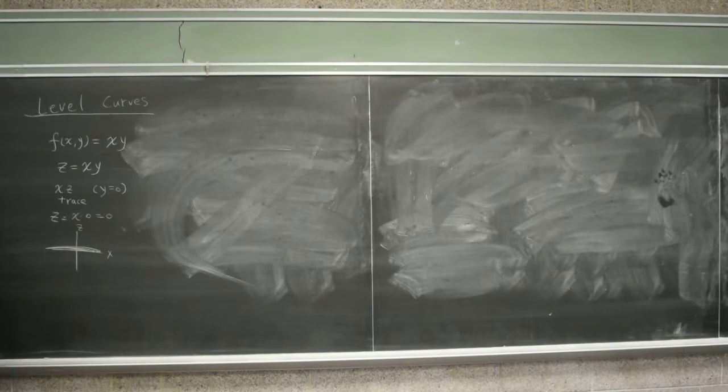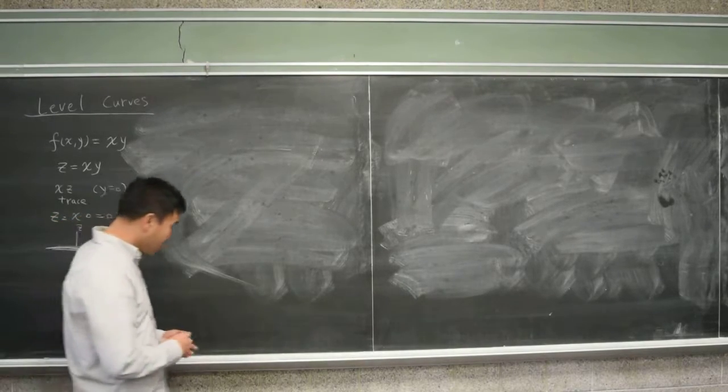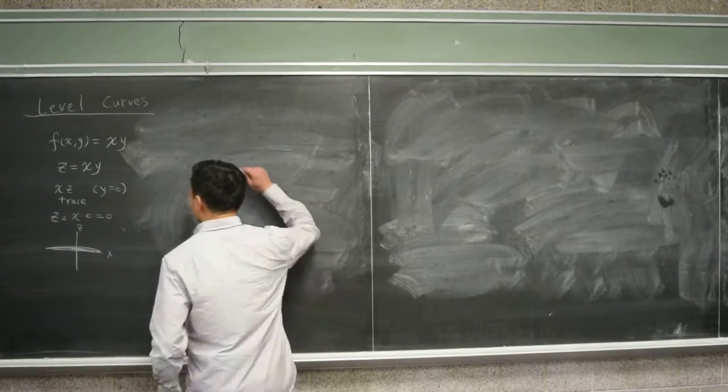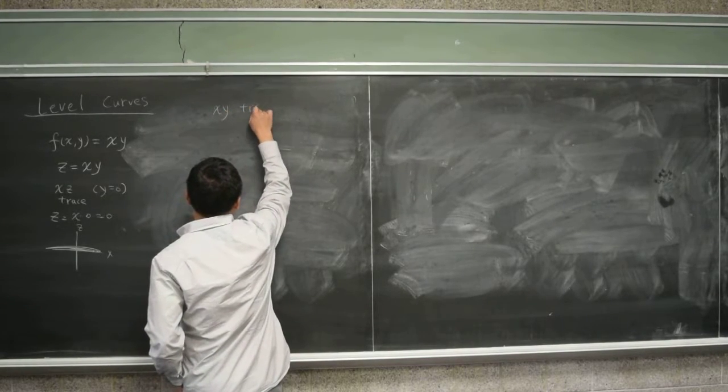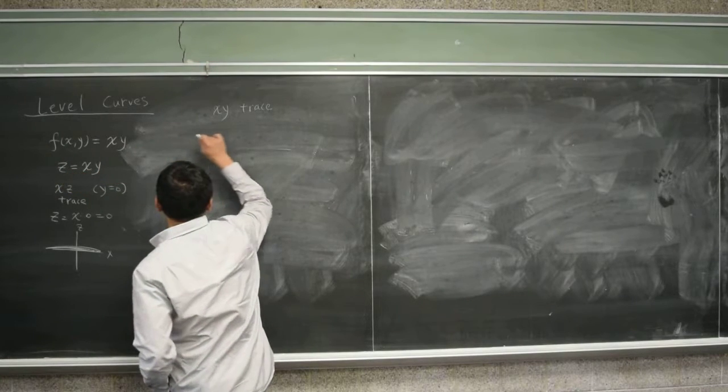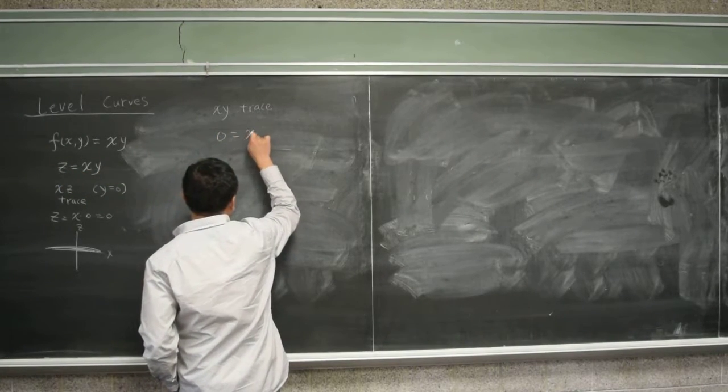And then if you try the xy trace, that's a little more challenging. What's xy trace? That's setting z equal to zero, so you have zero equal to x times y.